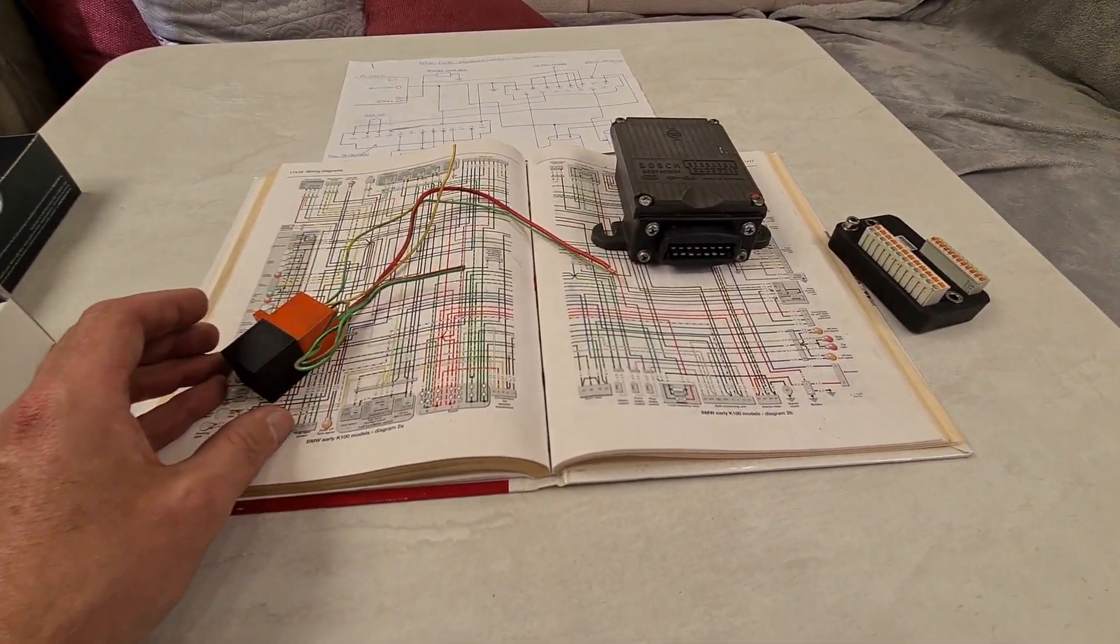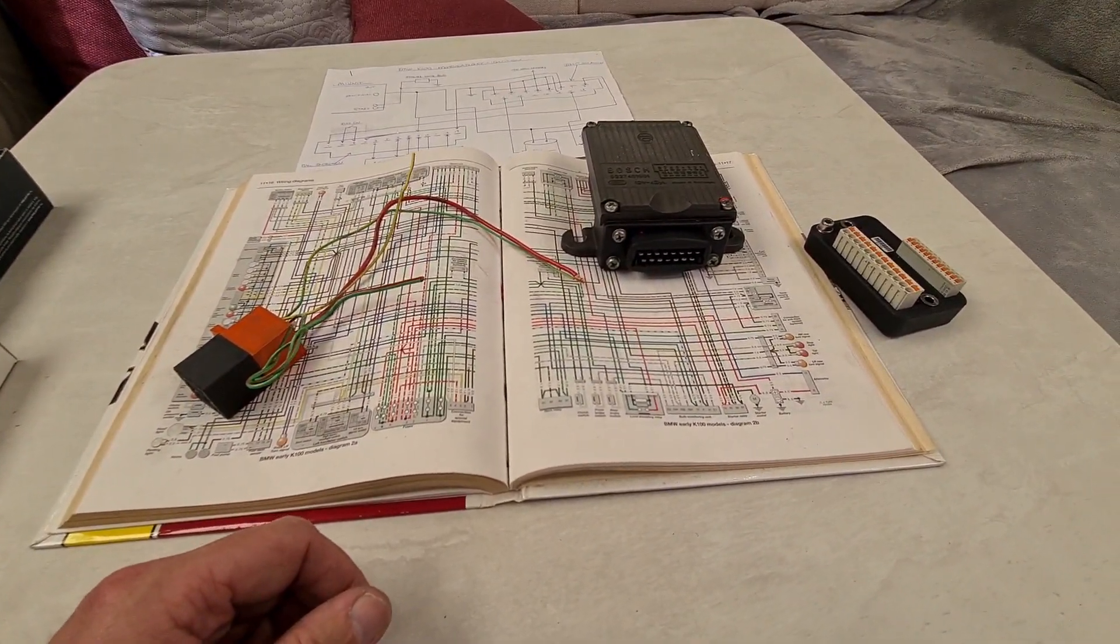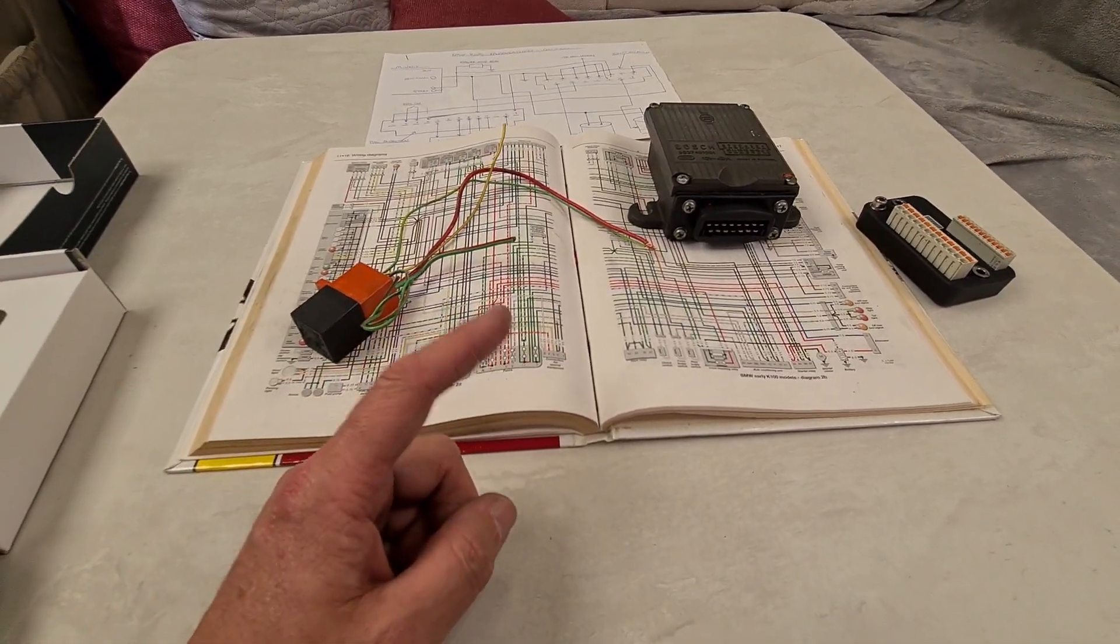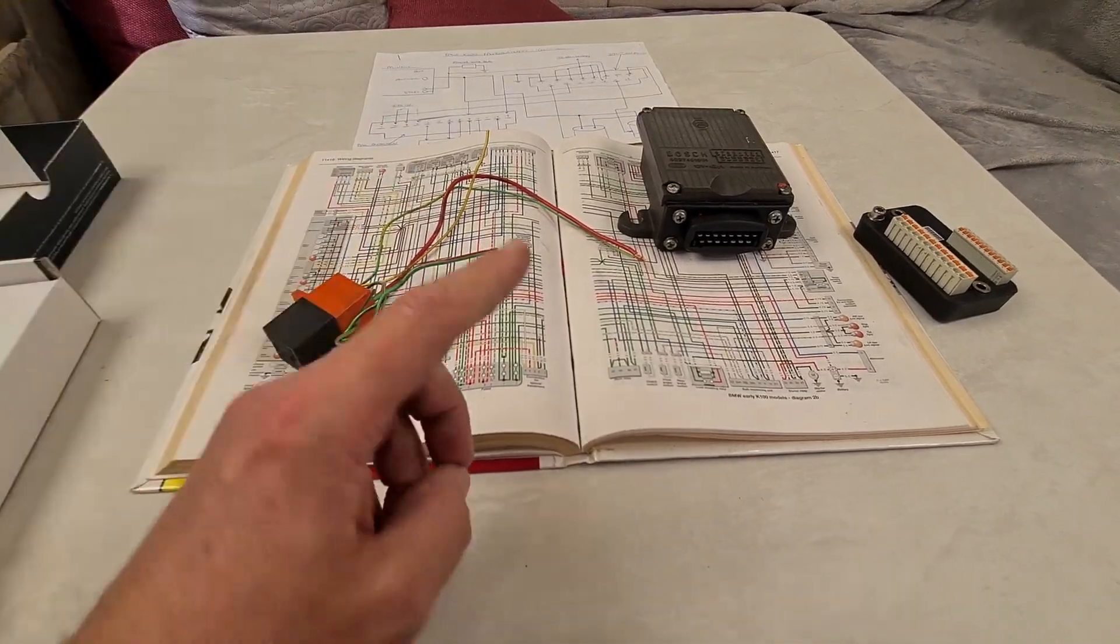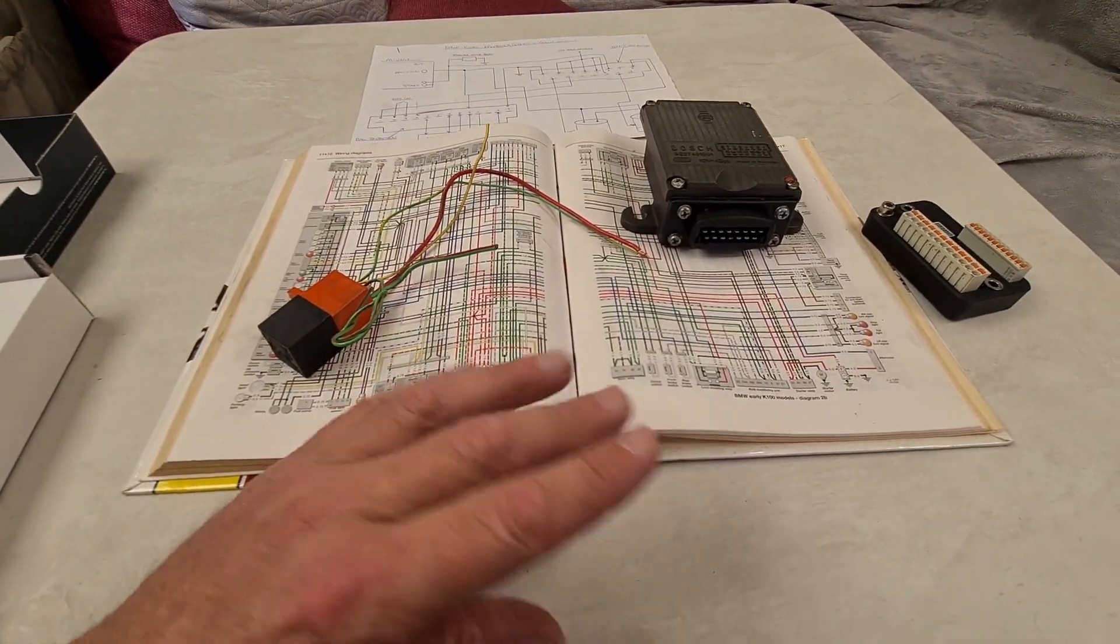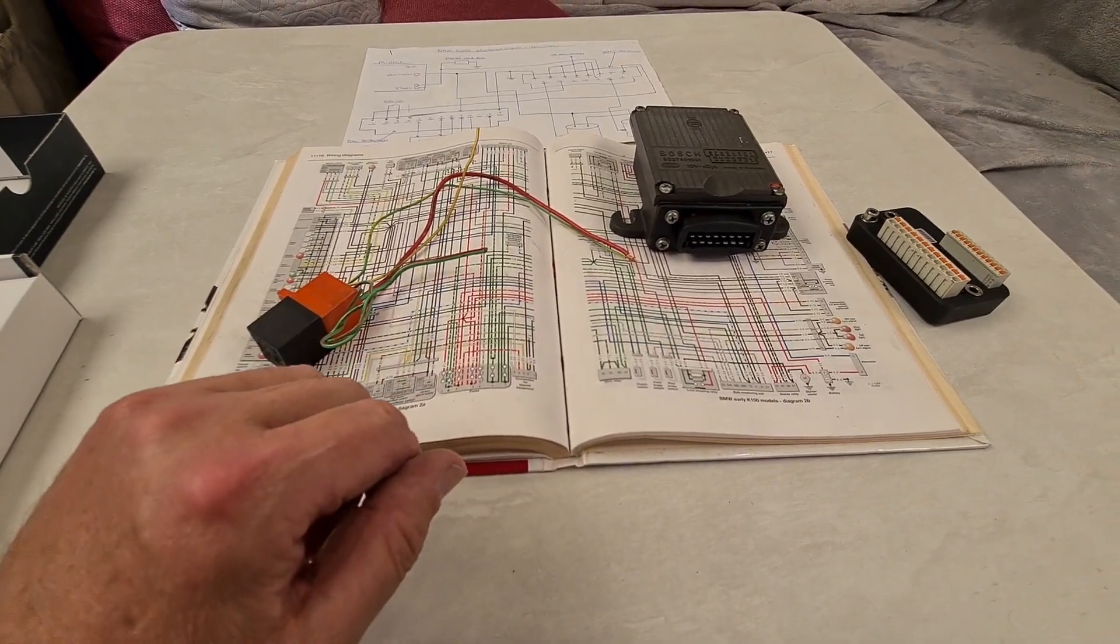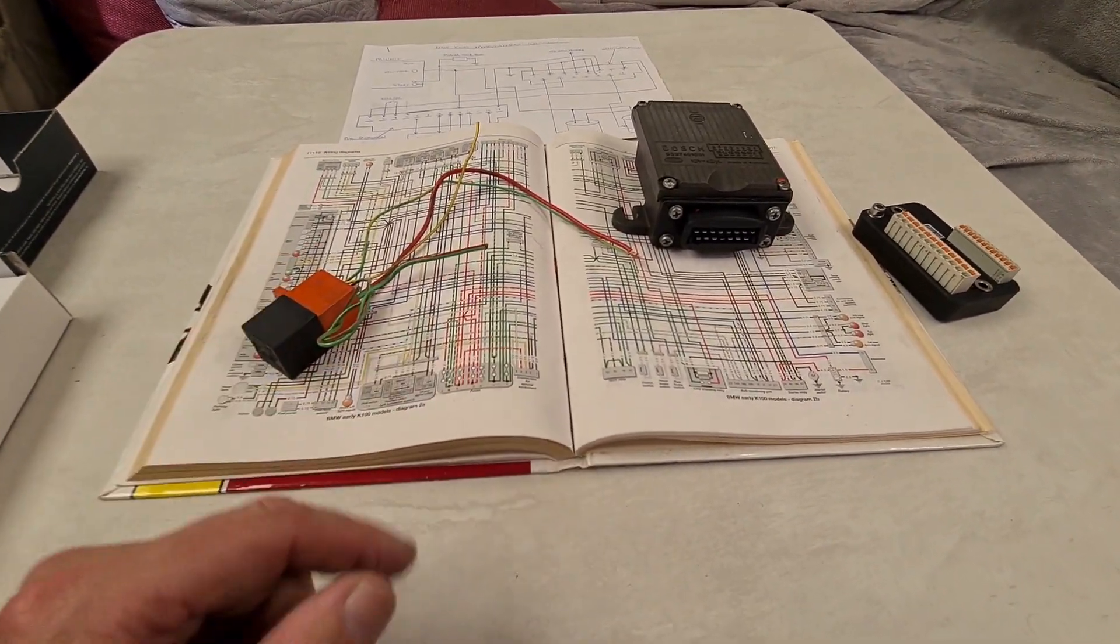So what's going on in this video? The original BMW, when it came from the factory, when you turned the key on, the fuel pump would run for about five seconds to prime the system, then it would shut off. As soon as you started the engine, the fuel pump would run again.